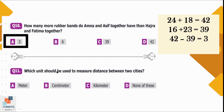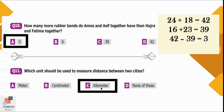Question number 11: Which unit should be used to measure the distance between two cities? Option A is meter — the length of a door or cupboard is measured in meters. Option B is centimeter — used for pencils, erasers, or glasses. Option C is kilometer — the distance between two places or cities is measured in kilometers. Option C is correct.